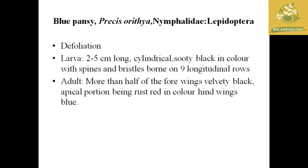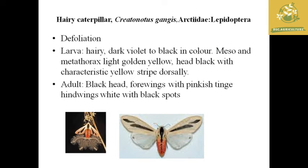The next pest is the blue pansy, one of the colorful butterflies, with scientific name Junonia orithya, which comes under the family Nymphalidae and order Lepidoptera. It causes defoliation but is not a serious or major pest; it is a minor pest of sweet potato. The larvae are cylindrical with a sooty black appearance having nine longitudinal rows. The adult's forewings are more than half velvety black with the apical portion red, and the hind wings are blue in color.